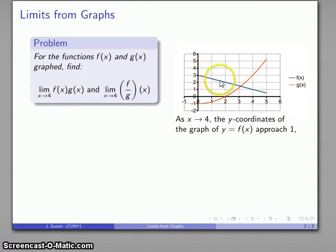So I'll follow the graph until I get close to x equals 4, which is right at this point, and it looks like if x is close to 4 then my y values are going to be close to 1.